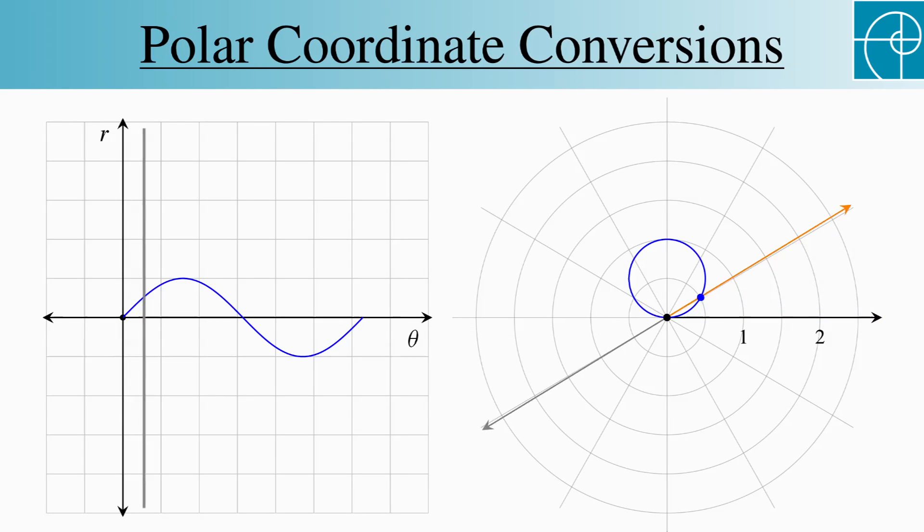Moving this vertical line across the rectangular graph corresponds to circling this ray around the origin, each one tracing the associated graph of sine.